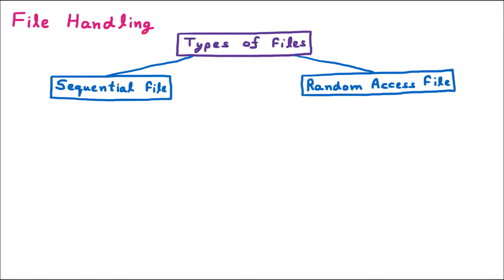Now we are learning the types of file. In file handling, there are different ways in which we divide the file. The first way is how we access the file. Based on file access, we have two types of file: the first one is the sequential file and the second one is the random access file.